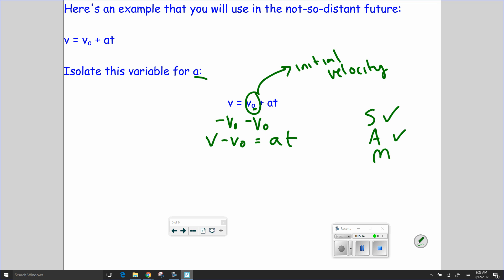And I've got multiplication. Well, here, A is multiplied by T. So I'm going to do the opposite of the multiplication and do division. I'll just divide both sides by T. T cancels out. And all of a sudden, I have isolated my variable. Velocity minus initial velocity divided by time, or T, equals acceleration.